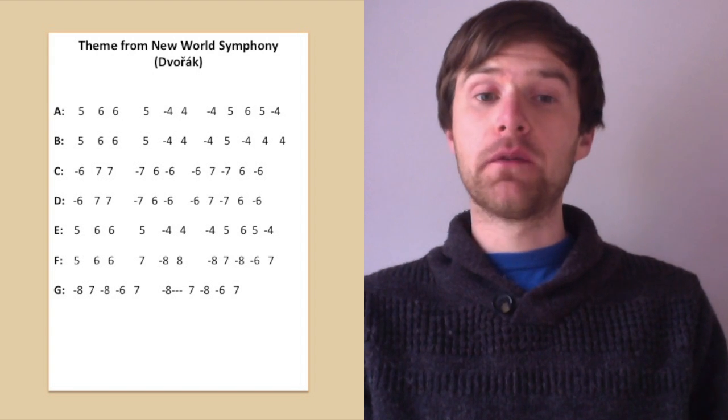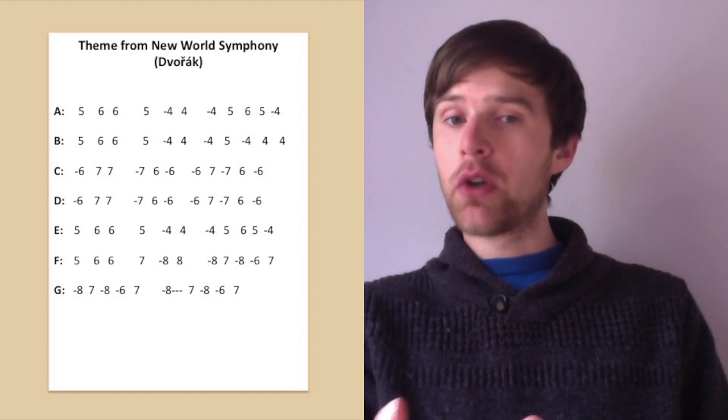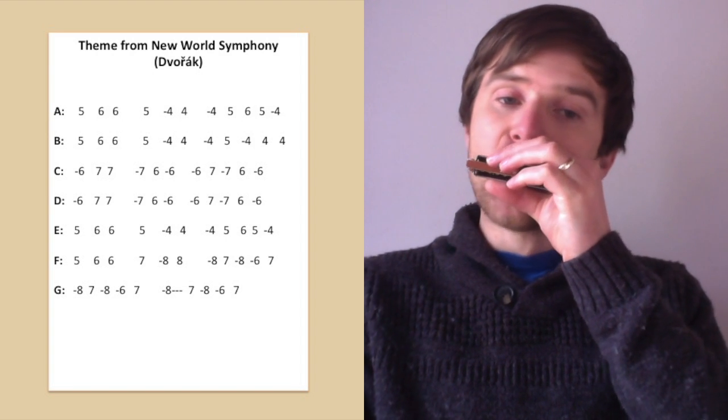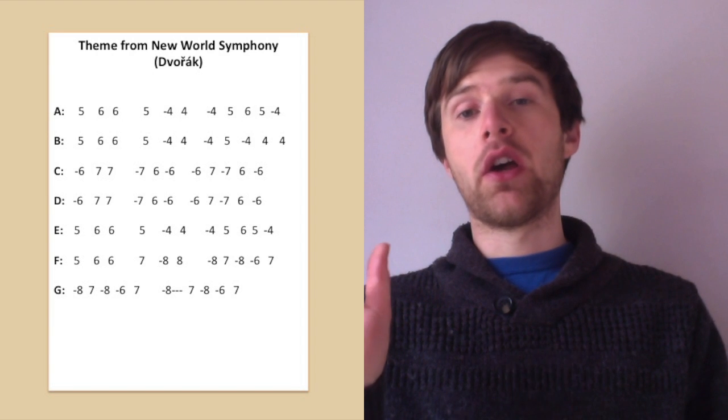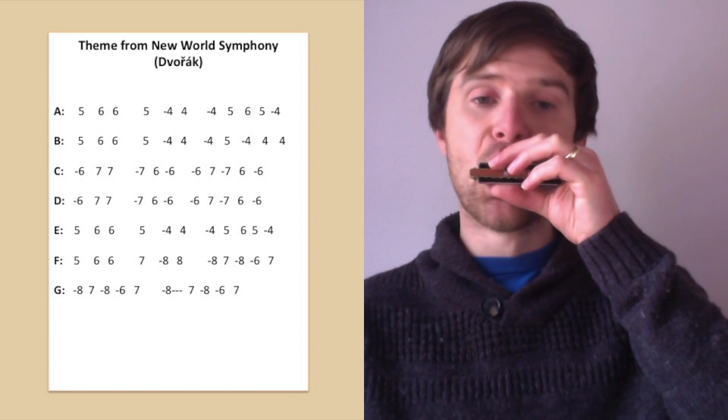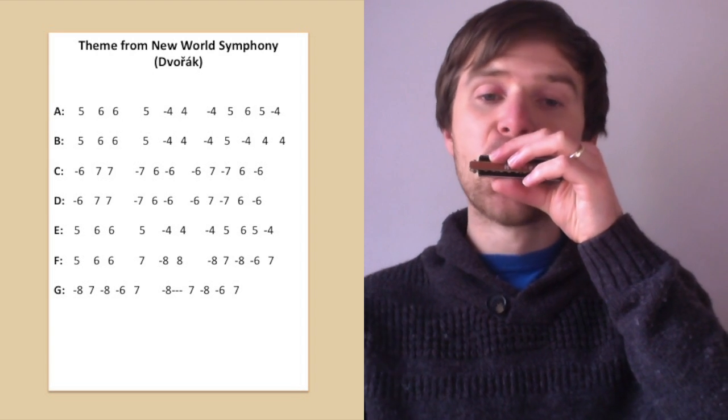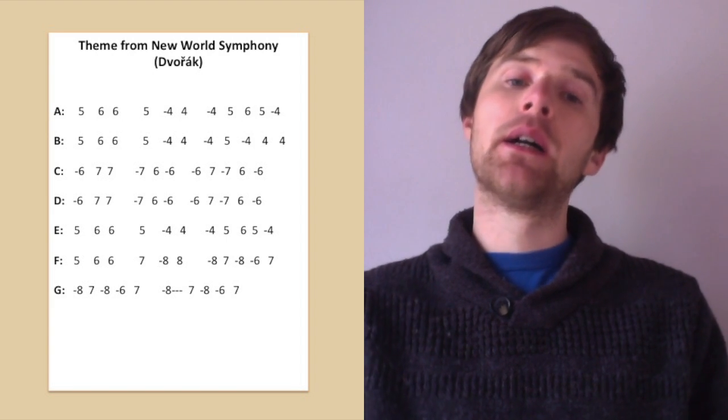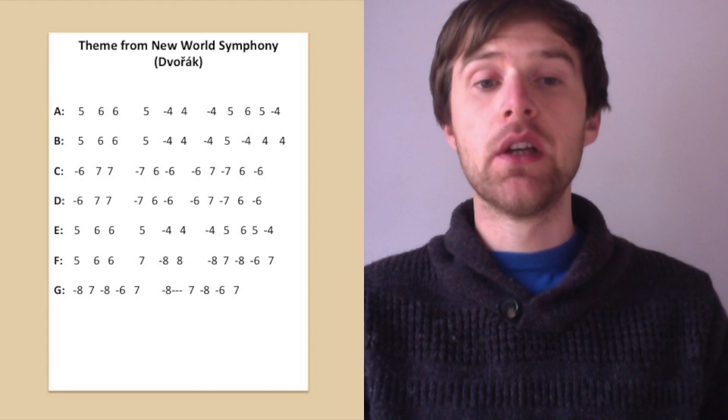Line G, just to finish off, it's just that last part of line F again, twice with one little change. So the first time we've got [plays] which is just the same as line F. And then the second one, the very last one, you'll see I put three little dots after the eight draw. That's because that's held longer. So it's kind of held for three beats. [plays] Ba, ba, ba, ba, ba, ba. So that's the big finish of this section, if you like. So that will be line G.